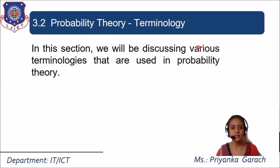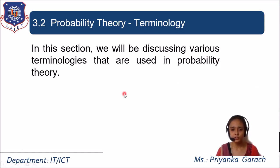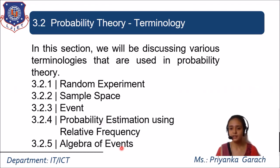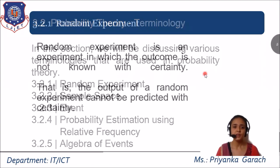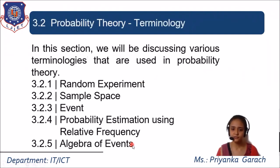Now we will study the probability terminologies. In this section, we will discuss various terminologies used in probability theory, such as: the random experiment, the sample space, the event, probability estimation using relative frequency, and the algebra of events. We will study all five of these in turn.